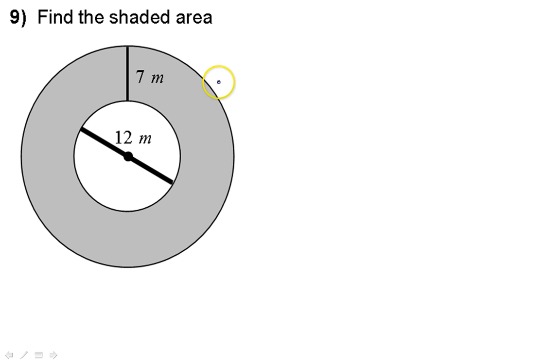But this time both shapes are circles, so if I want to find the area in between, my strategy is going to be to take the bigger circle and subtract the smaller circle.